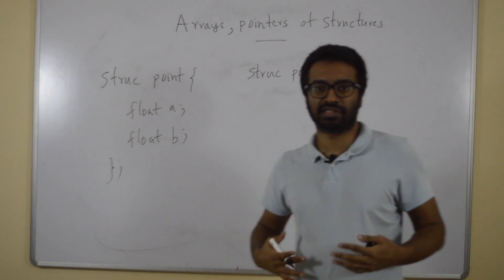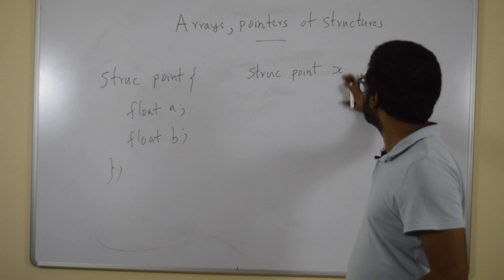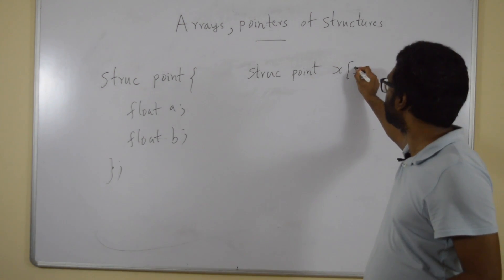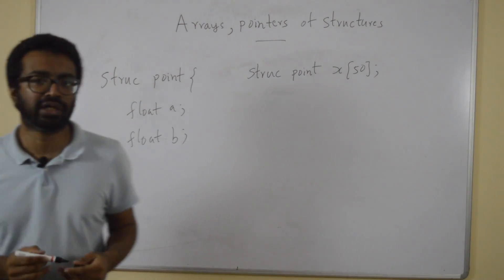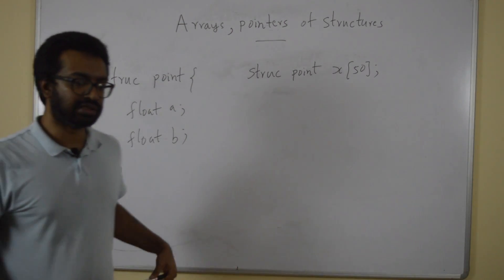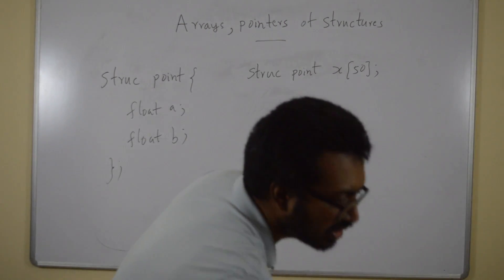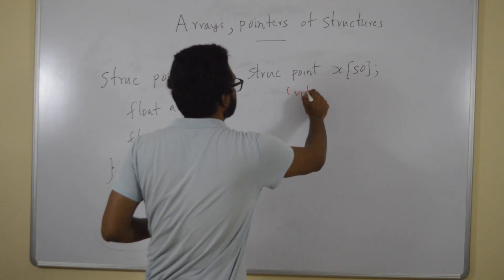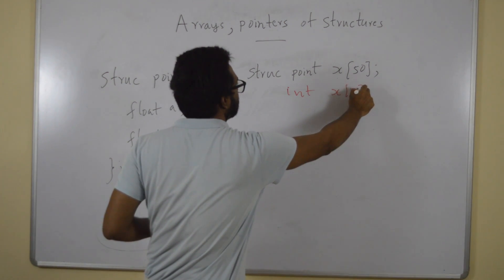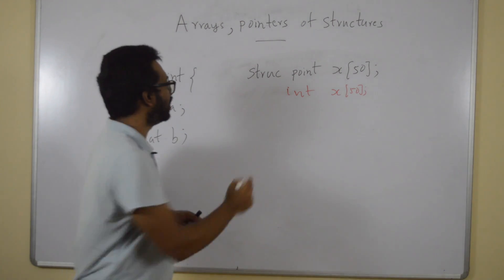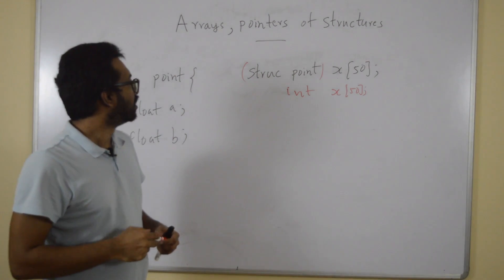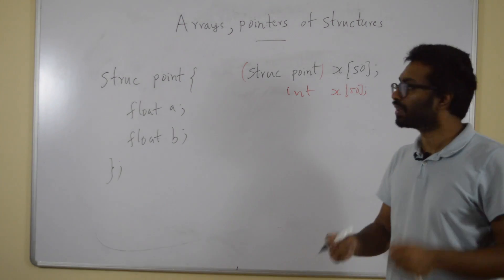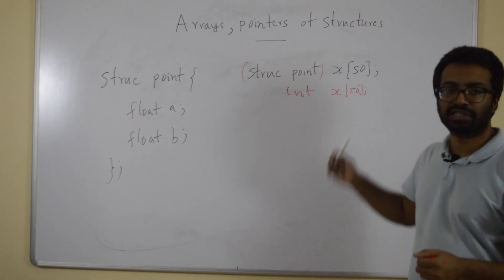What if I want 50 such structs? Simply write 50, exactly like how we would declare 50 integers. If we wanted to declare 50 integers, we would have written int x[50]. In place of int, we have struct point. So there are now 50 point structures in this array.